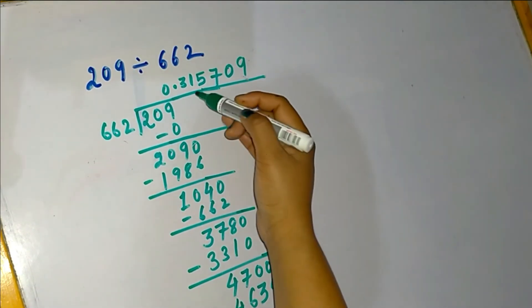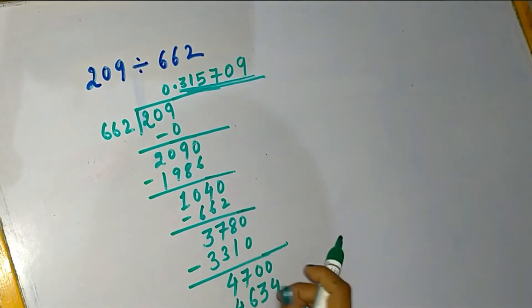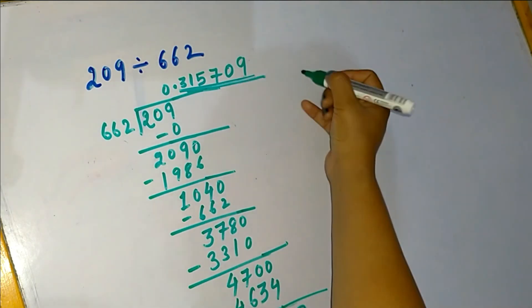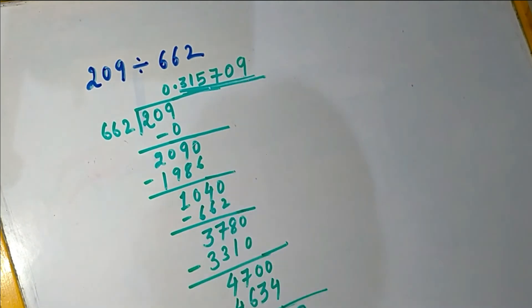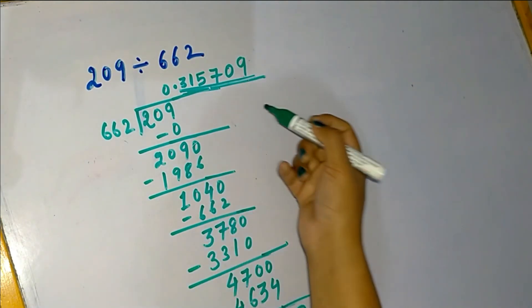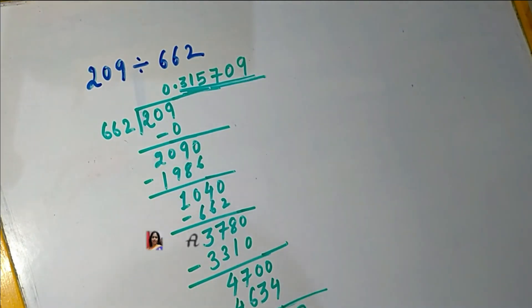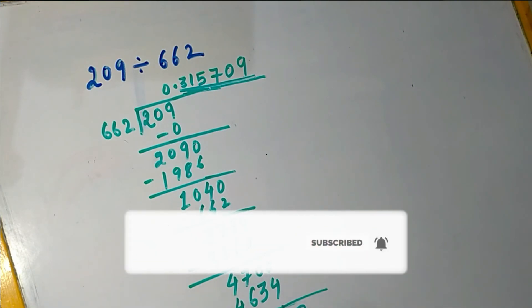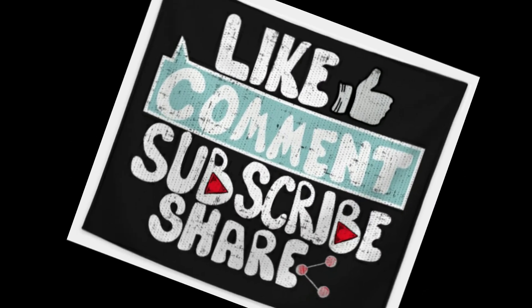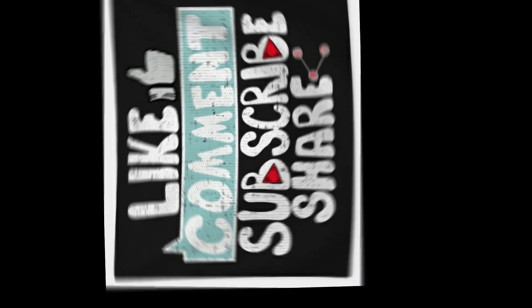We already solved this question up to 6 digits after the decimal point. In such questions, we can write the answer to 2 or 3 decimal digits, or as many digits as specified in the question. This is the process for how we can solve this type of question. I hope this is helpful. Thanks for watching! If you like this video, don't forget to like, subscribe, share, and comment. Thank you.